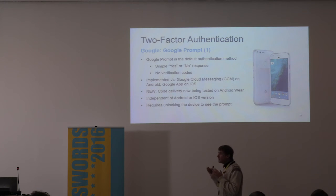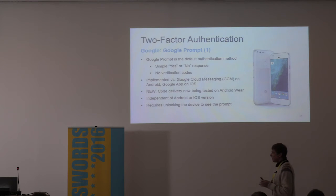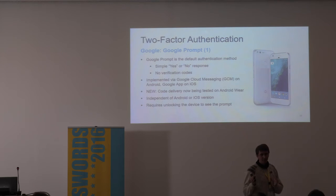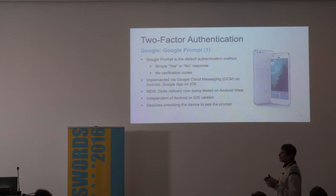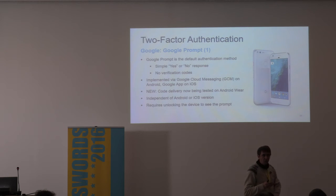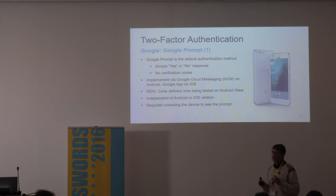There is another and more convenient two-factor authentication scheme available on Google Android — it only appeared recently, in the last three or four months. They call it Google Prompt. Google Prompt is simply a message that appears on your trusted Android device — a simple yes or no message. It connects through Google Cloud Messaging and goes through Google servers. If you're trying to sign in from an unusual place, new device, or new browser, you get a Google Prompt asking, 'Do you approve the sign-in request, yes or no?' If you push yes, there is no code displayed — you immediately authorize sign-in.